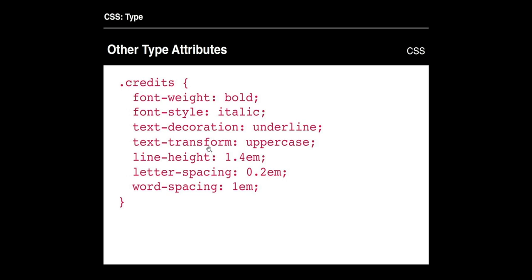There are plenty of other attributes beyond the basic ones. There's font-weight — you can apply bold or normal. There's font-style, which could be italic. There's text-decoration like underline, text-transformation like uppercase or lowercase, line-height (which would be like leading — 1.4em), letter-spacing (which would be the kerning), and word-spacing too. There are lots of other options not covered here, but you can find whatever you're looking for with a quick online search.